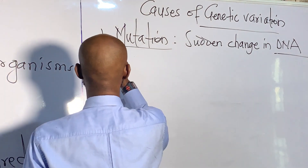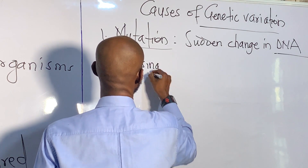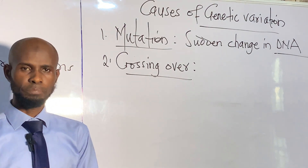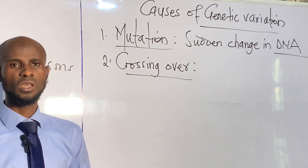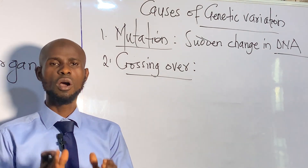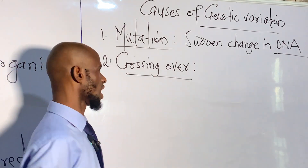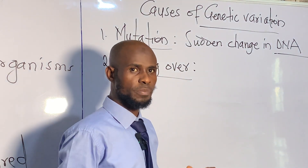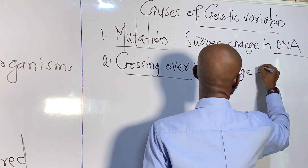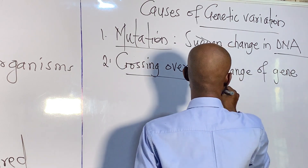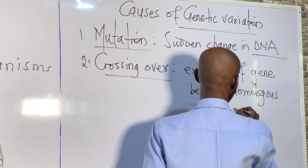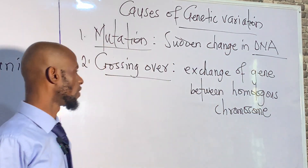Another reason for organisms differing from one another is what is called crossing over. Crossing over means exchanging genetic material between chromosomes that are alike — those chromosomes that are alike are called homologous chromosomes. So we define crossing over as the exchange or recombination of genes between homologous chromosomes.